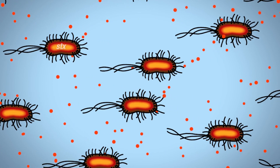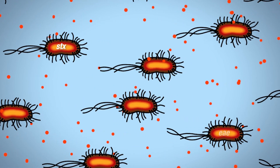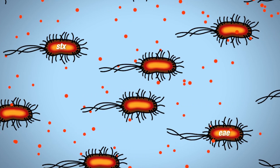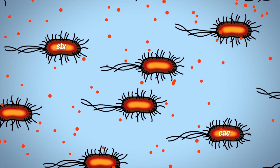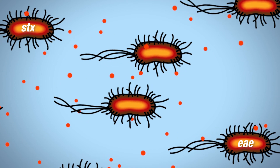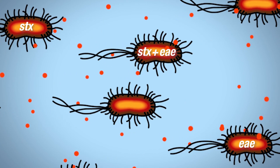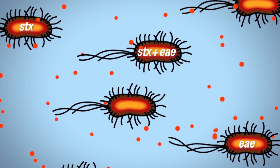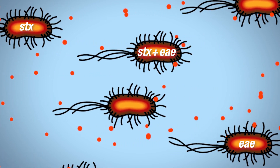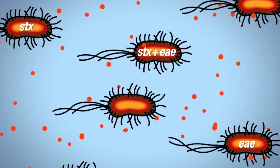EHEC is a highly pathogenic subset of Shiga toxin-producing E. coli, or STEC. Foods are EHEC positive if they have an E. coli bacterium carrying both the STX gene for Shiga toxin production and the EAE gene for the intimin attachment protein. This can be challenging for other technologies to distinguish.